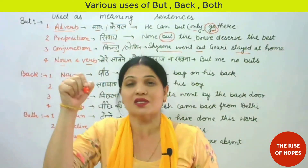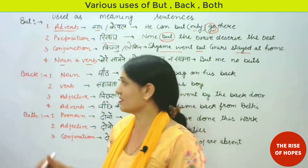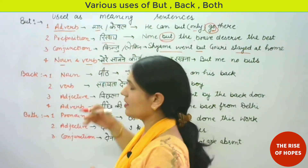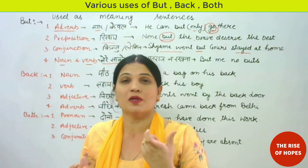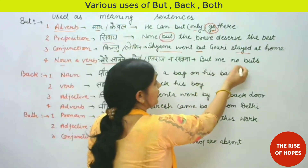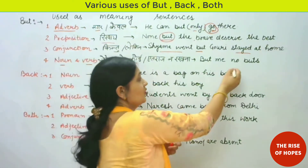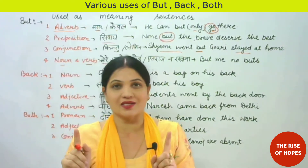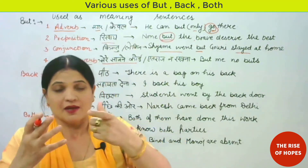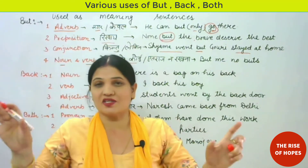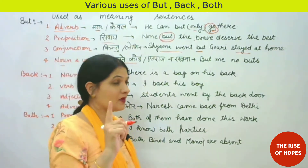Now 'but' can also be used as a noun and as a verb in the same sentence. As a noun, 'but' becomes the subject of the sentence, meaning 'objection' or 'agar-magar'. As a verb, it means to raise objections. Example: 'No buts' — meaning no objections, no ifs and buts, no excuses in front of me.